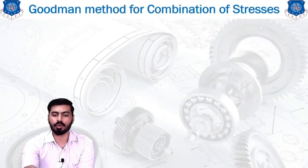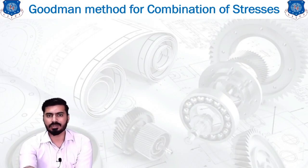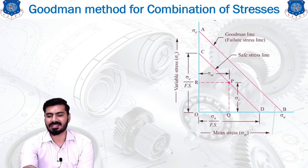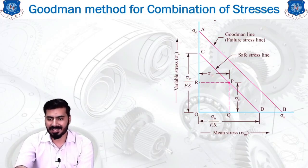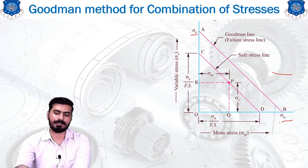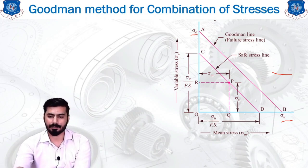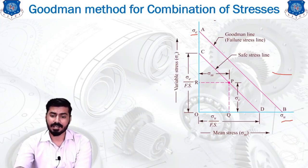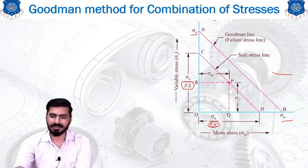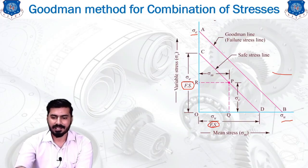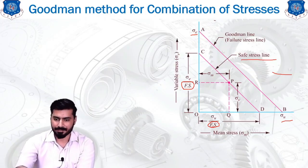Goodman's method is generally used as the optimum method to design a component. The Goodman line is represented on the diagram between sigma-e and sigma-u, shown as a pink line on screen. Another pink line represents the factor of safety: if you want to account for the factor of safety of the material, divide the given stress value by the factor of safety to get another line, known as the safe stress line.